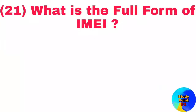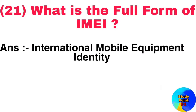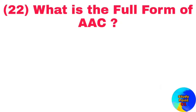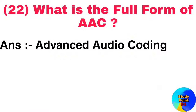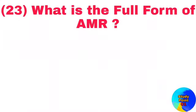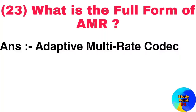Question number 21: What is the full form of IMEI? Answer: International mobile equipment identity. Question number 22: What is the full form of AAC? Answer: Advanced audio coding. Question number 23: What is the full form of AMR? Answer: Adaptive multi-rate codec.